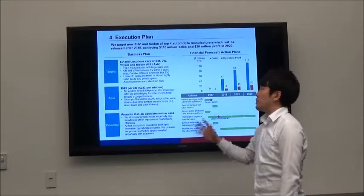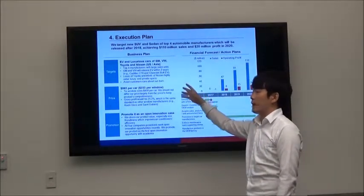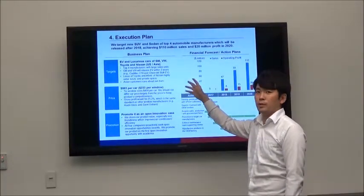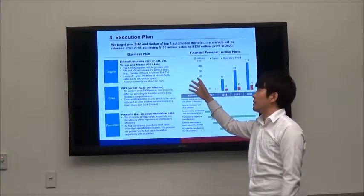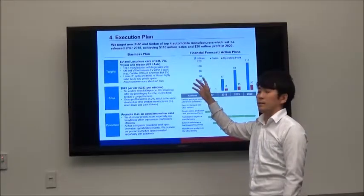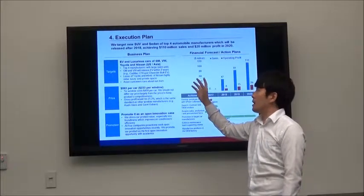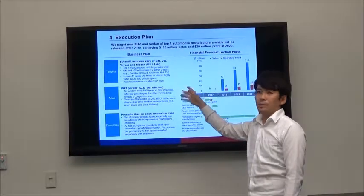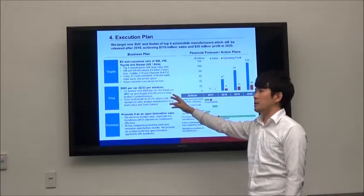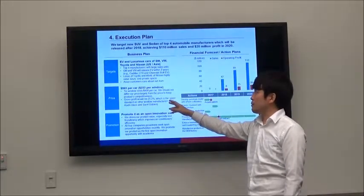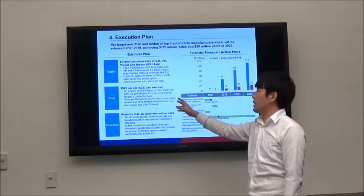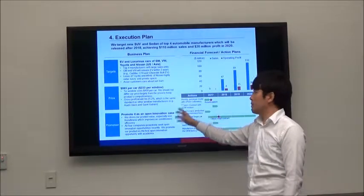Okay. So to successfully launch our product, we have to clarify target, price, and promotion. For target, we will focus on EV and luxurious cars of GM, VW, Toyota and Nissan in the US and Asia market. These companies have large sales and they are going to launch new EV and luxurious cars in these five years. And also price, we will set price at $993 US dollars per car. Because tint window costs $800 per car, so we have to have price competitiveness for this. And also promotion, we will promote this as an open innovation case in the US and Asia market.